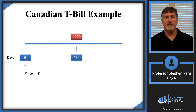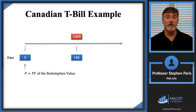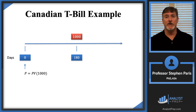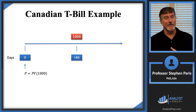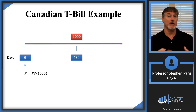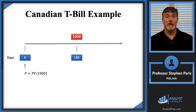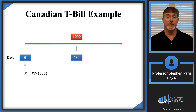So now, what is the price we're going to pay? It's straightforward: you take the present value of the redemption value, which in this case is the present value of $1,000. I haven't yet given you enough information to calculate that numerically — specifically, I haven't told you what type of interest to use for this present value calculation.